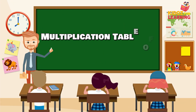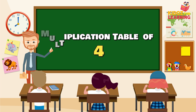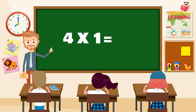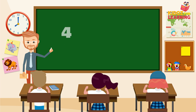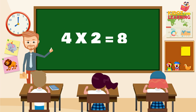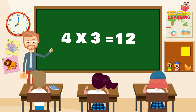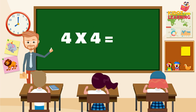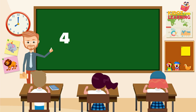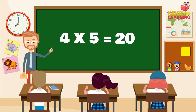Multiplication table of 4. 4 times 1 is 4. 4 times 2 is 8. 4 times 3 is 12. 4 times 4 is 16. 4 times 5 is 20.